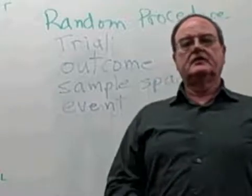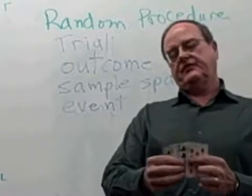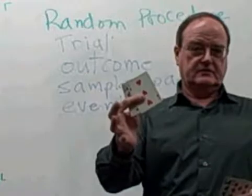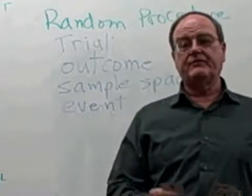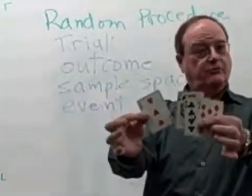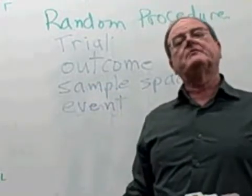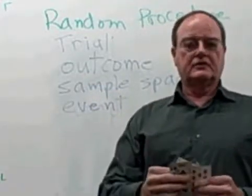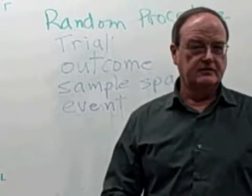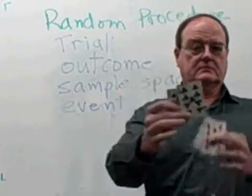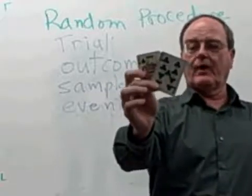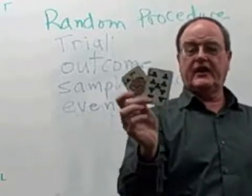I can define the event that I'm interested in as getting a heart, so the probability of that event would be one out of four. Or I can define my event as choosing a black card, in which case I have two possible outcomes that satisfy that event.